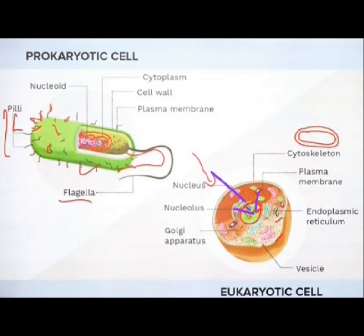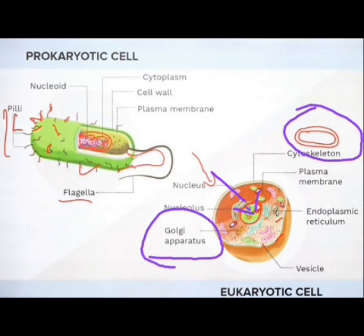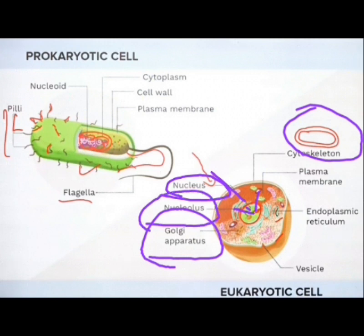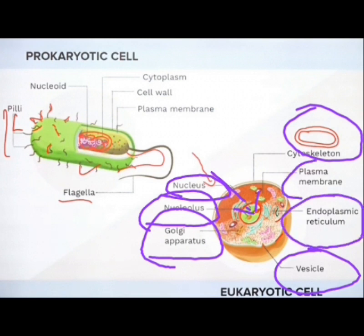There are so many cell organelles in the eukaryotic cell. The cell organelles are double-layered. The Golgi apparatus is double-layered, the nucleus is also double-layered, and so on. The eukaryotic cell has a nucleus, nucleoid, Golgi apparatus, endoplasmic reticulum, and plasma membrane.